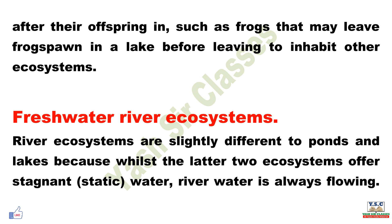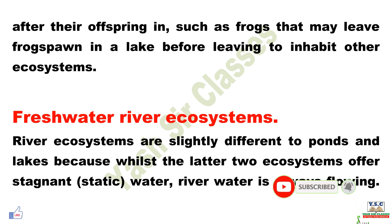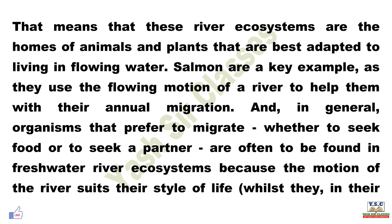River ecosystems are slightly different to ponds and lakes because, while the latter two ecosystems offer still, static water, river water is always flowing. That means that river ecosystems are home to animals and plants that are best adapted to living in flowing water. Salmon are a key example, as they use the flowing motion of rivers to help them with their annual migration.